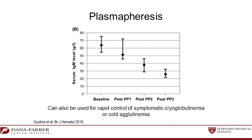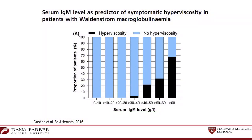Just as plasmapheresis removes IgM and helps hyperviscosity, it can also help patients with symptomatic cryoglobulinemia or symptomatic cold agglutinemia in the acute setting — so removing IgM is helpful in many different scenarios. We looked at the relationship between IgM level and the likelihood of symptomatic hyperviscosity at that moment. Below 3,000, the risk is essentially absent. Between 3,000 and 4,000 it is about five percent; between 4,000 and 5,000 about 20 percent; 5,000 to 6,000 around 30 percent.